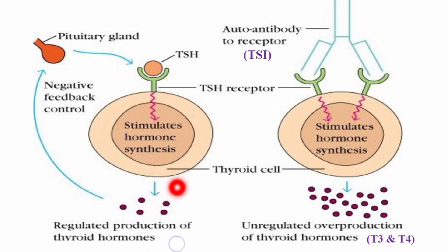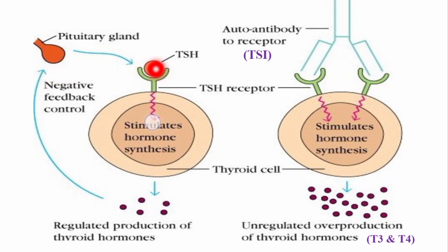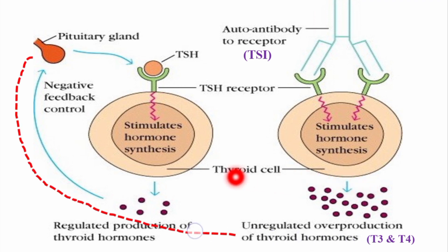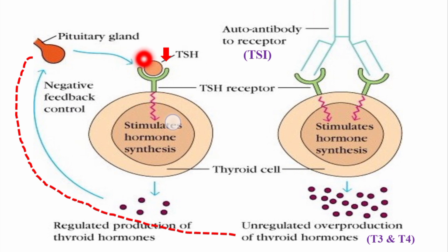T3 and T4 inhibit the secretion of TSH by negative feedback — this is the regulation in the normal gland. But when TSIs act on the thyroid gland, there is too much production of T3 and T4 in such quantities that they almost completely block the production of TSH from the pituitary gland. So often in Graves' disease, TSH levels are very low or may literally be zero.